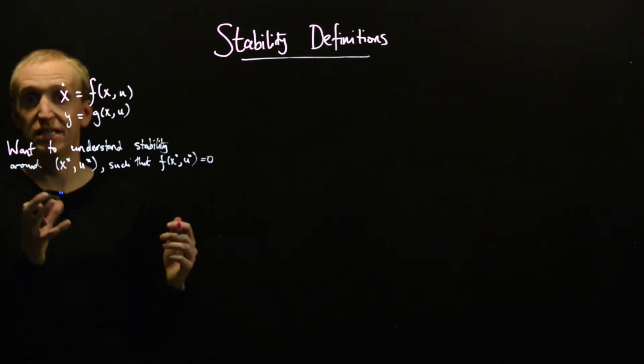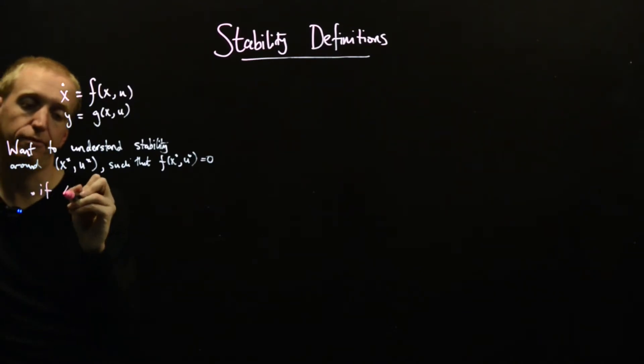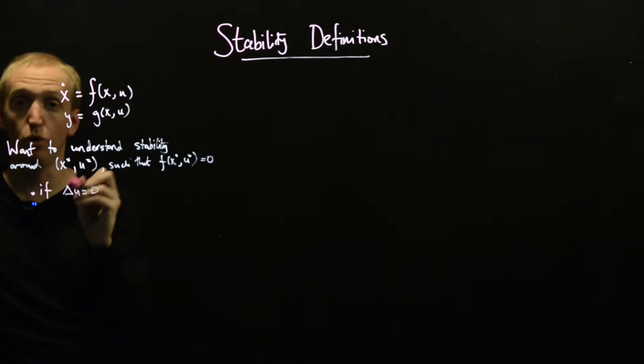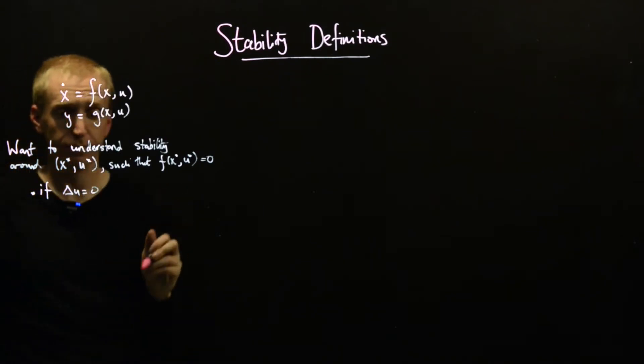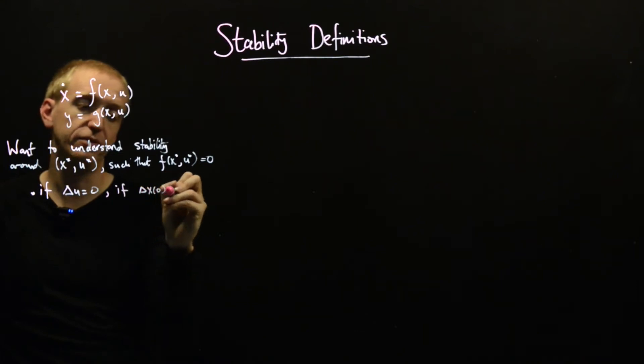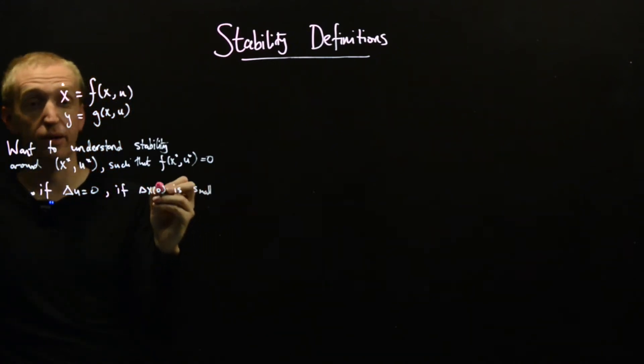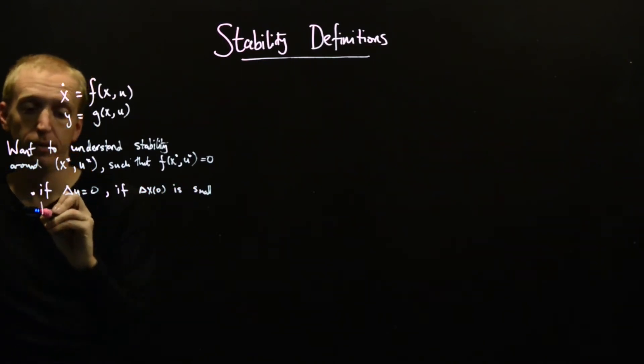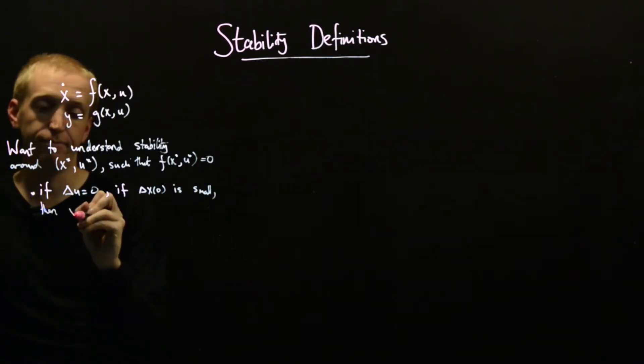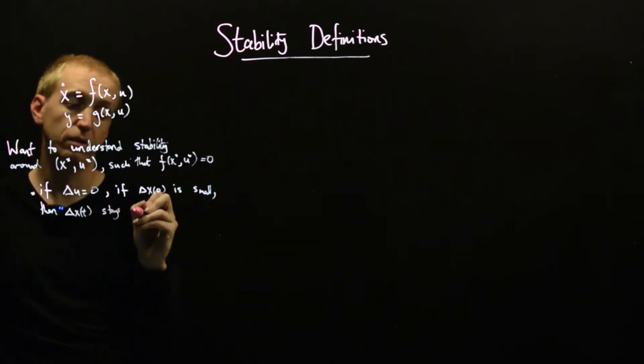So the first item in our wish list might be, if delta u equals zero, so we're not applying any extra inputs around our equilibrium input, so if delta x of zero is small, so this means that at time t equals zero, the distance away from our equilibrium point is small.